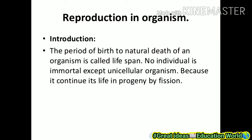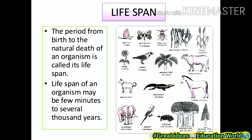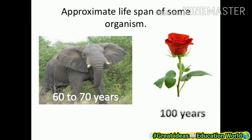Unicellular means a one-celled animal. Next, we understand about life span. The period from birth to the natural death of an organism is called its life span. Life span of an organism may range from a few minutes to several thousand years. Here are some examples: the approximate life span of an elephant is 60 to 70 years, and a rose plant lives about 100 years.